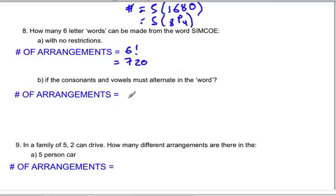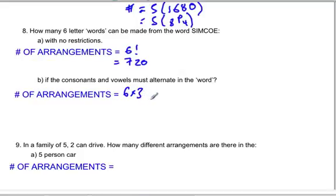You can do this a couple of ways. We could start with any of our six letters. If we start with a consonant, the next must be a vowel; if we start with a vowel, the next must be a consonant. So we have three choices for the first position, then two choices for the second, then two choices remaining for the third position.